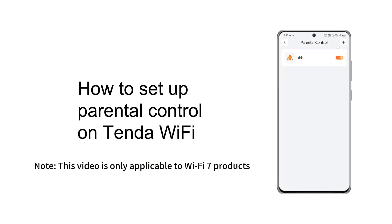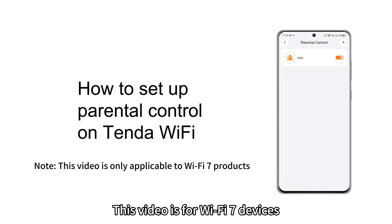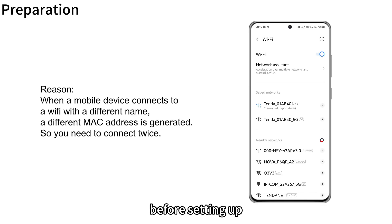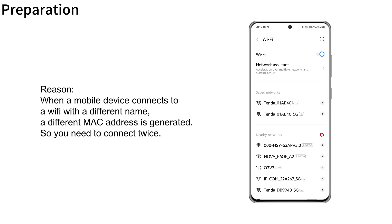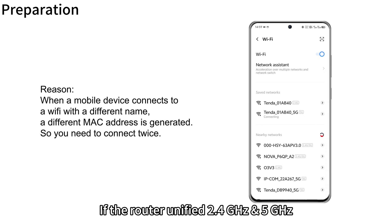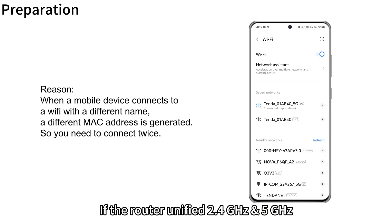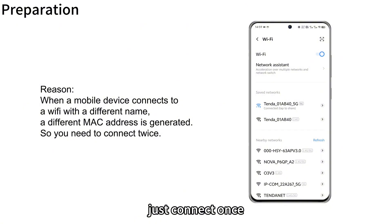How to set up parental control on Tendo Wi-Fi. This video is for Wi-Fi 7 devices. Before setting up, please connect the device to the router's 2.4GHz and 5GHz Wi-Fi in sequence. If the router has unified 2.4GHz and 5GHz, just connect once.